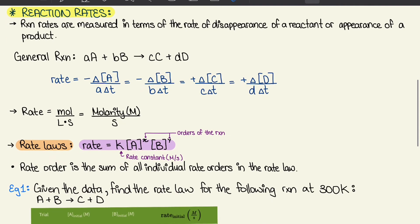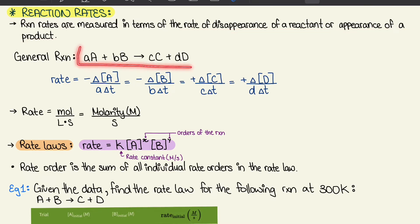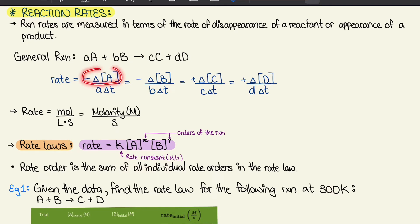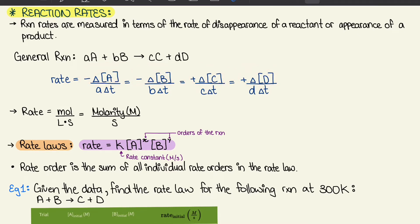Next we move on to section 5.2, where we talk about reaction rates. Reaction rates are measured in terms of the rate of disappearance of a reactant or appearance of a product. In the general reaction equation, the lowercase letters are the coefficients and the uppercase letters are the concentrations of the different molecules. Note that reactants have a negative sign in front of them, whereas products have a positive sign, and they're divided by the coefficient times the time. Rate equals moles per liter per second — moles per liter is molarity, so it's M per second.